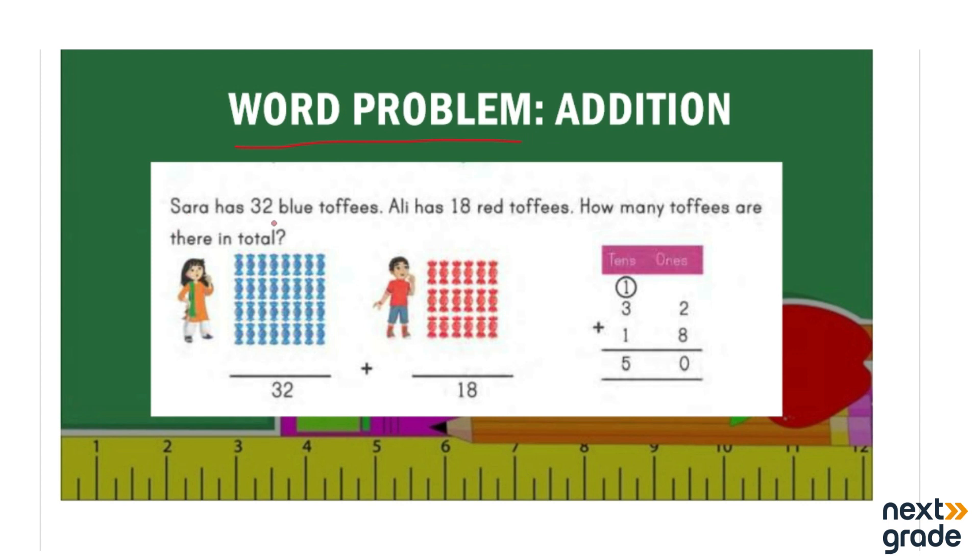Let's solve this example together to understand how we solve word problems by reading them. Sarah has 32 blue toffees and Ali has 18 red toffees. How many toffees are there in total? These are the 32 toffees of Sarah and these are 18 toffees of Ali.